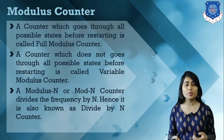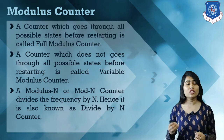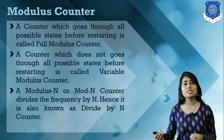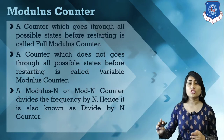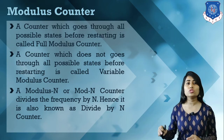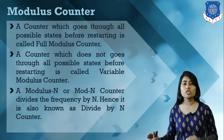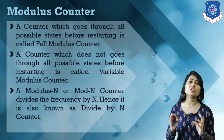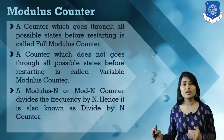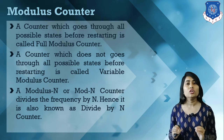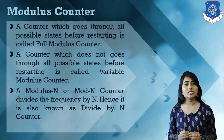A modulus-n or mod-n counter which counts a total of n values also divides the frequency of the external clock signal by n. That's why a modulo-n counter is also known as a divide-by-n counter or frequency divider by n counter. For example, to divide frequency by 8 — where 8 equals 2 raised to 3 — we use a 3-bit counter.